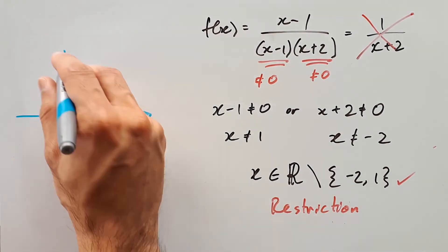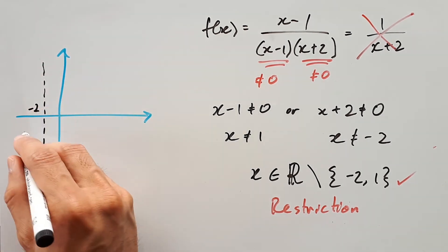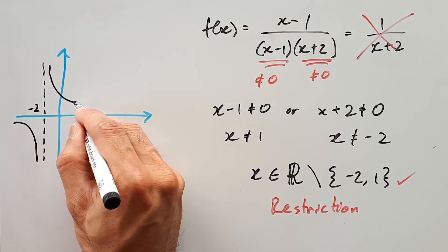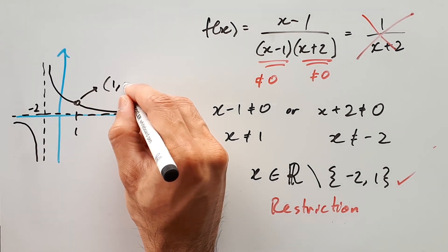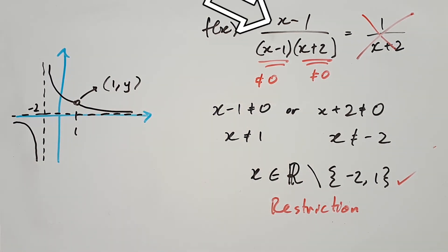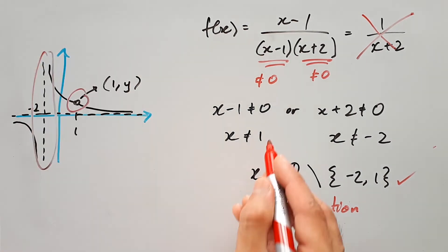And check out the graph of this function, it's actually pretty cool. It has a vertical asymptote at x equals negative 2, and a hole at x equals 1. The reason it's a hole and not a vertical asymptote is simply because you have x minus 1 as your numerator, and that is trying to divide itself in the denominator. So you would end up with this very unique graph.